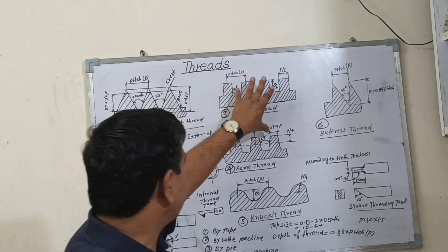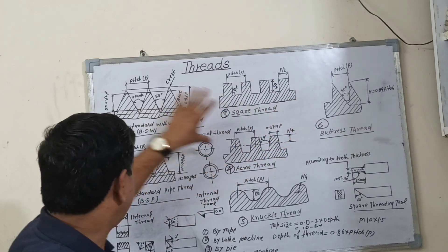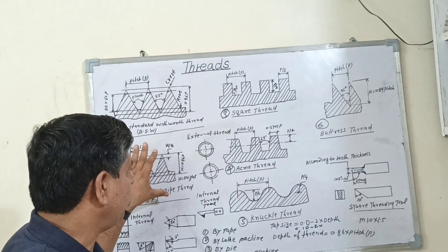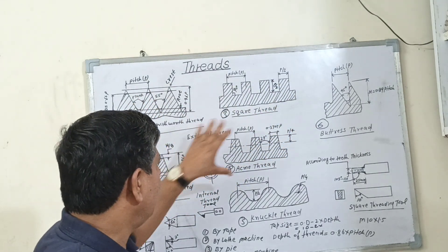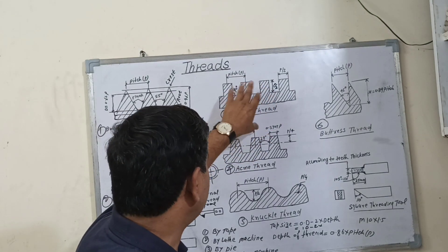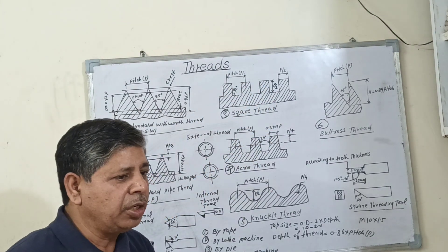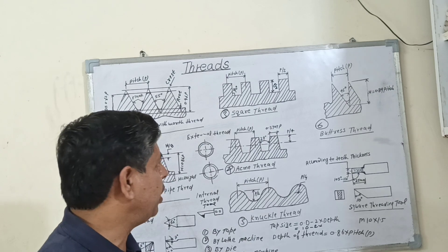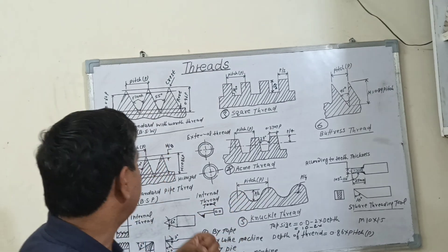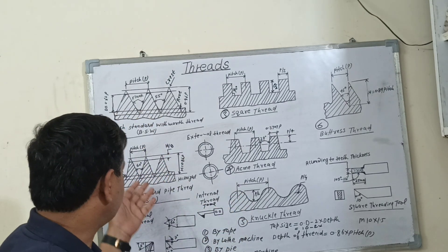The square thread is not more powerful as compared to the V-thread, but it has low friction resistance compared to the V-thread.